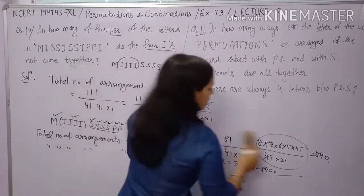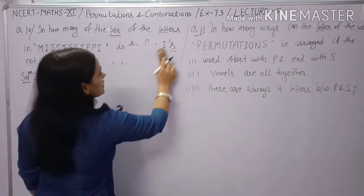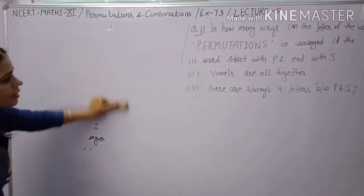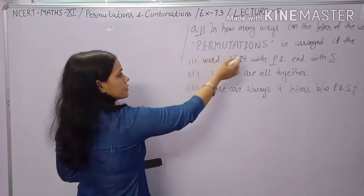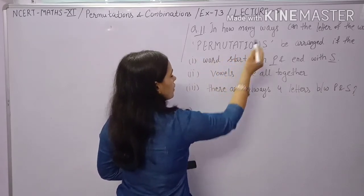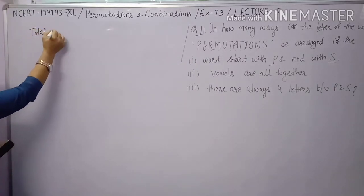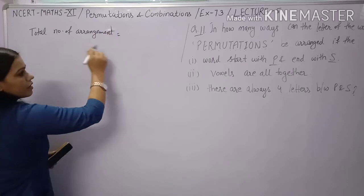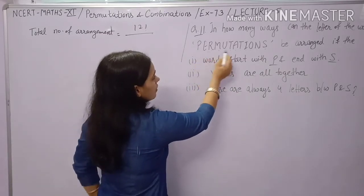Question 11: In how many ways can the letters of the word PERMUTATIONS be arranged? The word has 12 letters. T appears twice; all other letters are distinct. Total arrangements = 12! / 2!.